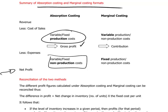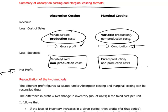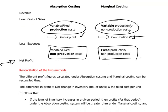Marginal costing has a different way of grouping the costs. What it's doing is extracting all the variable costs, whether production or non-production, in order to derive a contribution result, and putting below that all the fixed costs, whether they're production or non-production in nature. So we're carving up the cake in different ways.